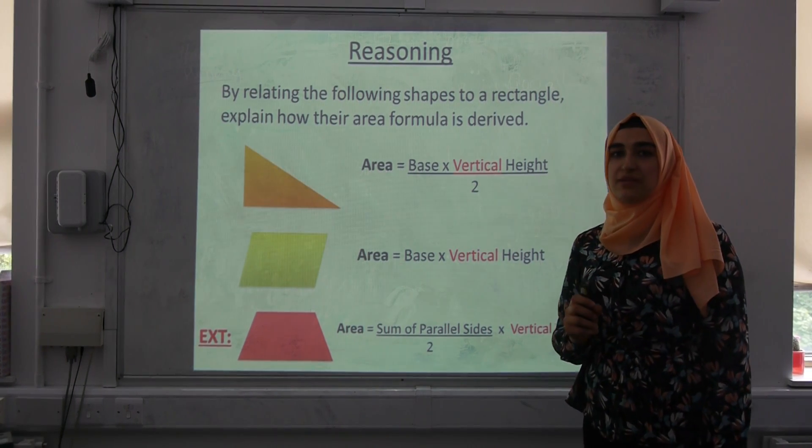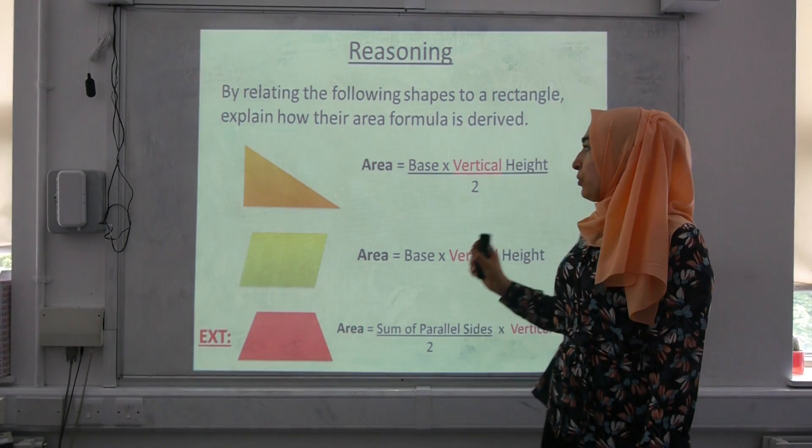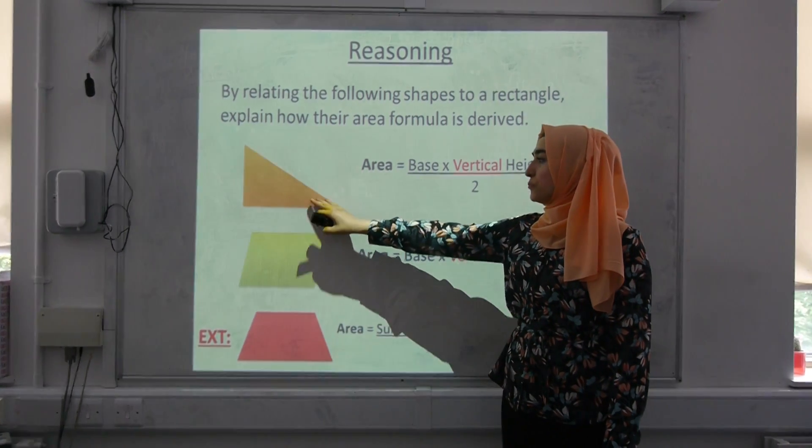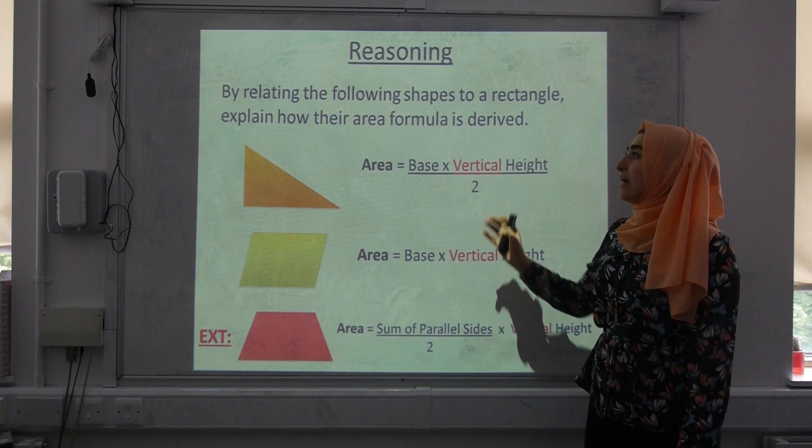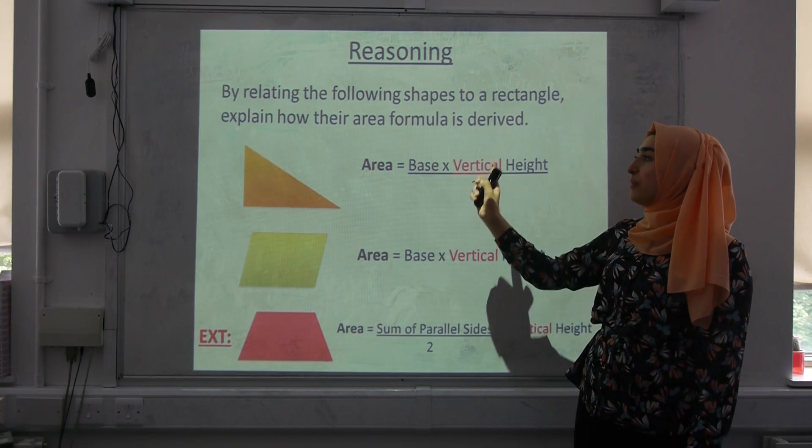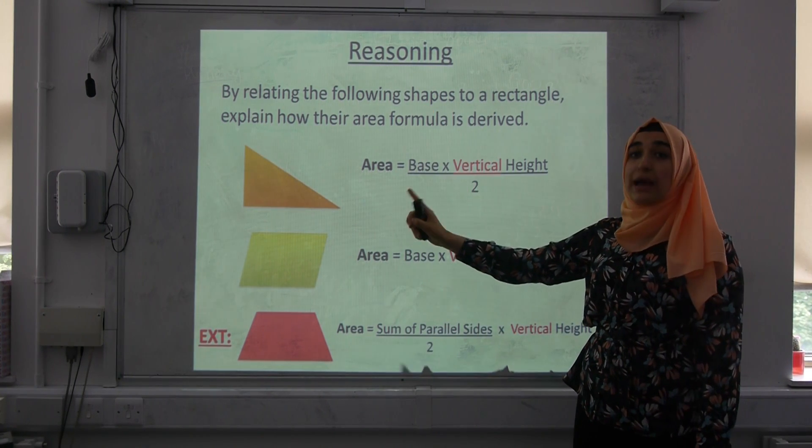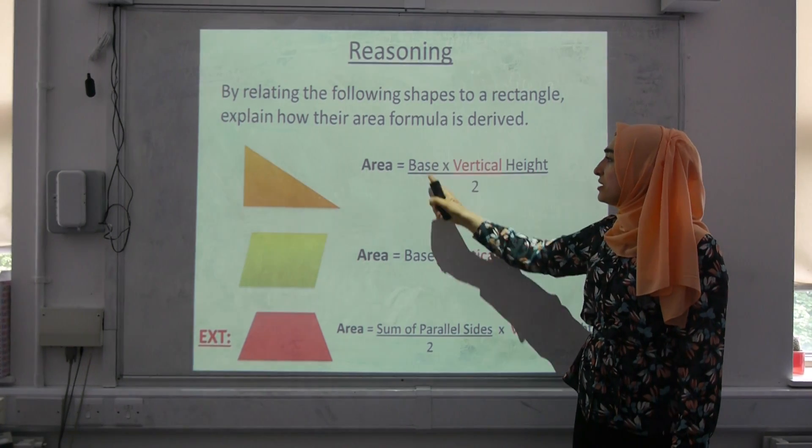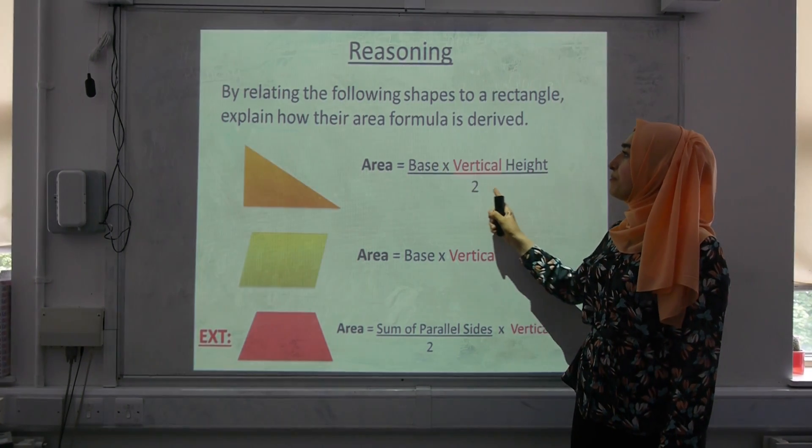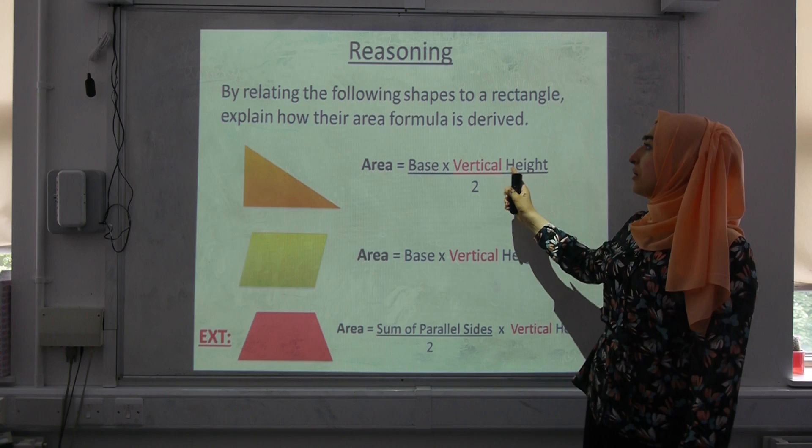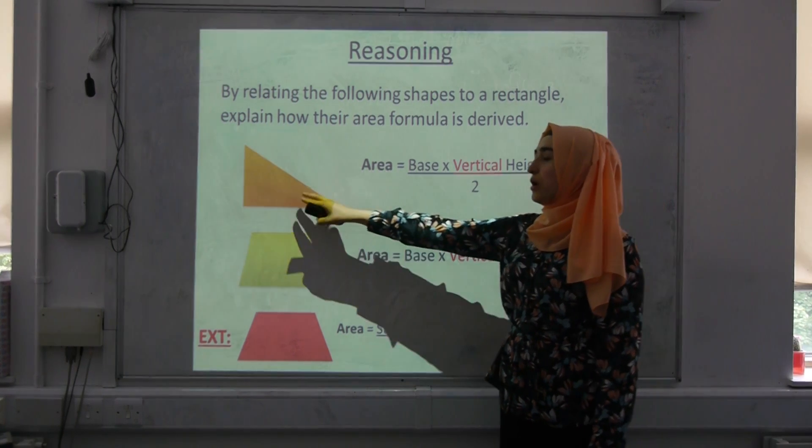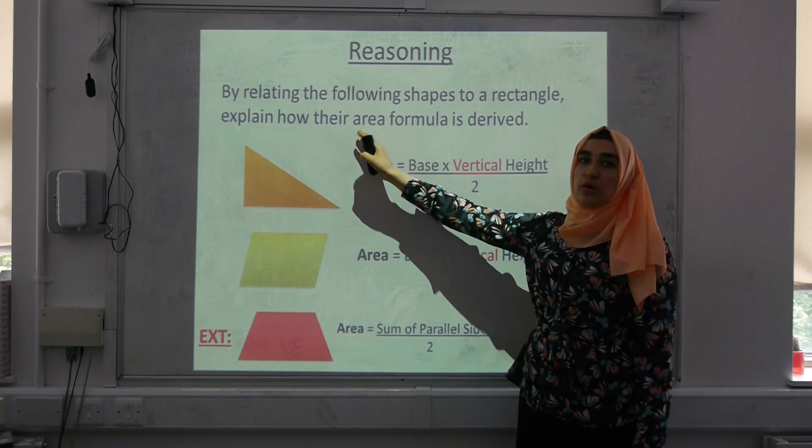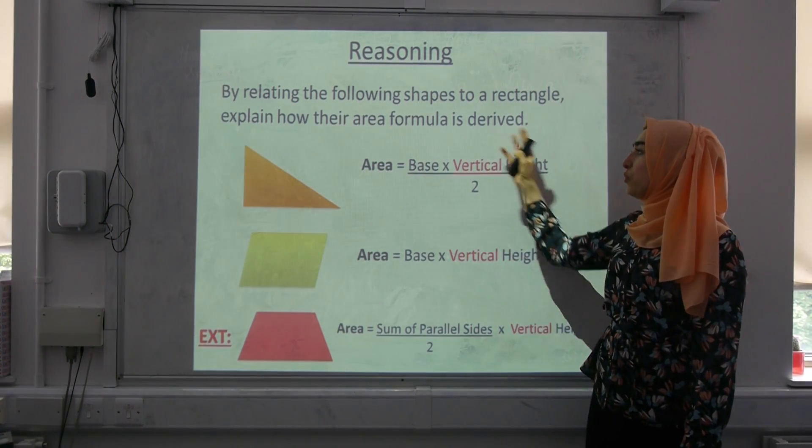Here's a reasoning activity I want you to carry out. We've already matched the 2D shapes to their areas, and what I want you to do now is by relating the shape to a rectangle, I want you to explain how the area formula is derived. So this is a triangle. Using a rectangle, can you please explain how we've arrived at this particular formula?